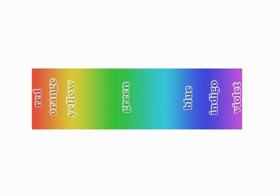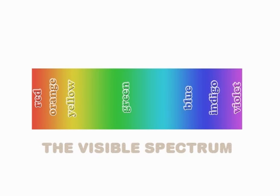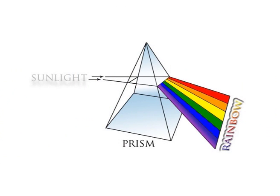The colours in this order make up the visible spectrum. You can separate out the different colours in the visible spectrum from ordinary sunlight using a prism.